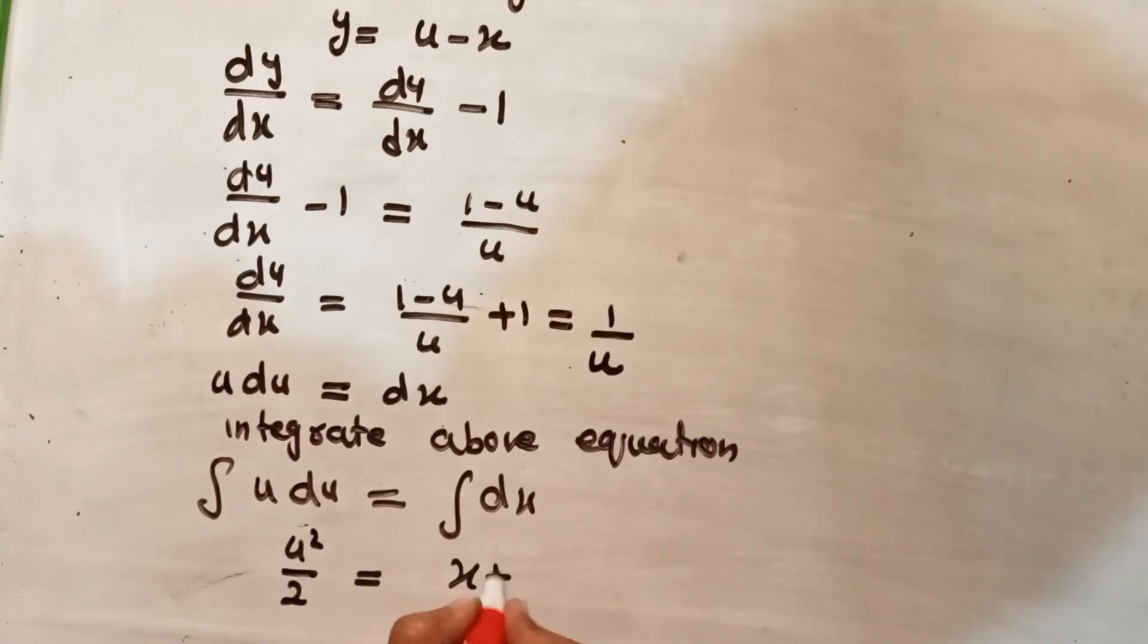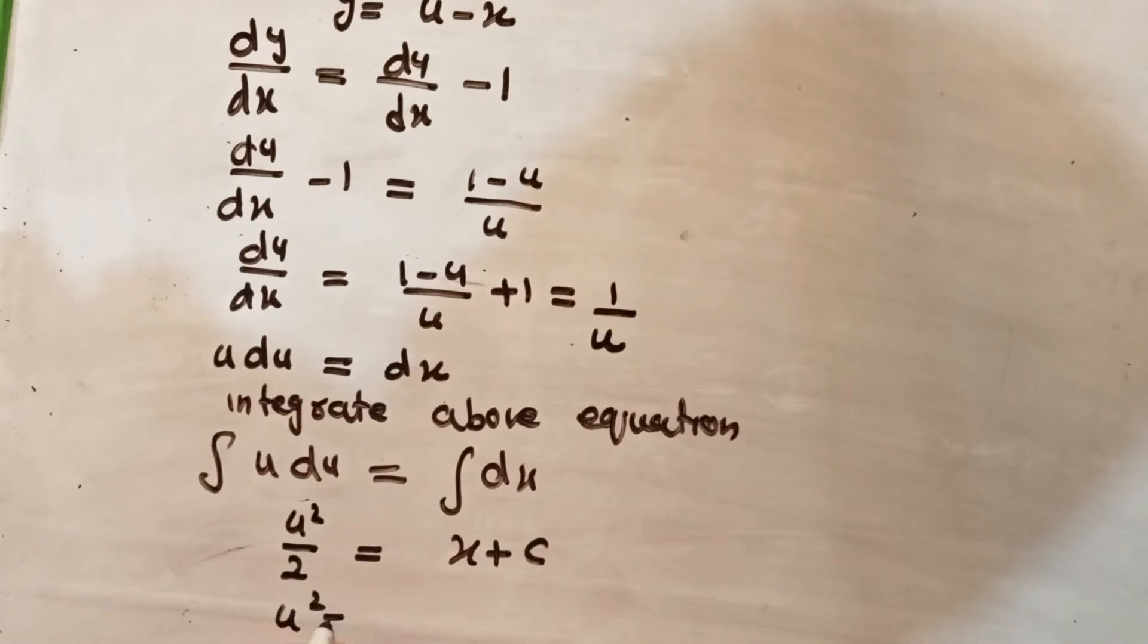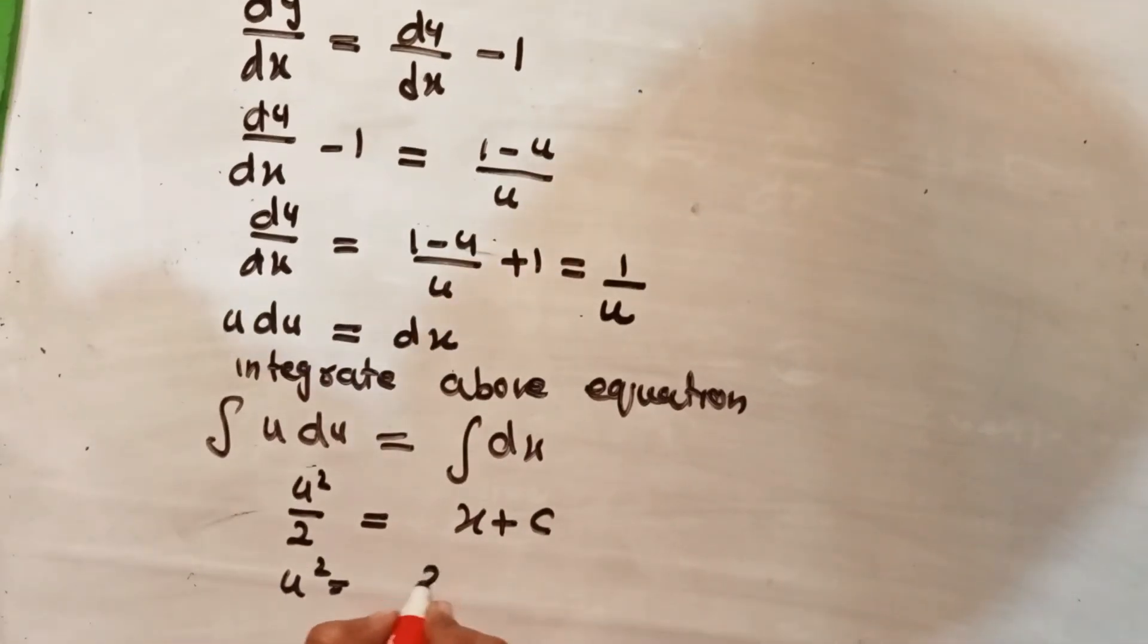And u square is equal to 2x plus 2c. Consider 2c is equal to c prime.